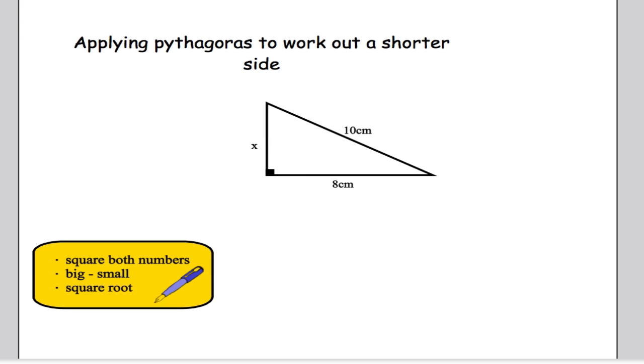Right, let's have a look. The other type of problem we could have is where we're asked to work out a shorter side. So I'm given one of the short sides, I'm also given the hypotenuse. So I know the longest side, and I know one of the other sides, and I want to work out this side here, I've called it x.